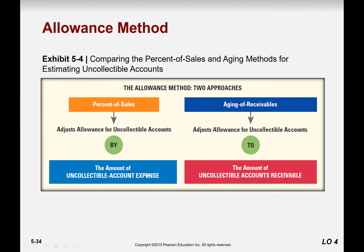If we compare these two methods: the percentage of sale method will give you the amount of uncollectable expense, while the aging receivable method will give you the amount of uncollectable receivable. Simply put — percentage of sale gives you the expense; aging gives you the total receivable amount — and then you calculate the allowance accordingly.